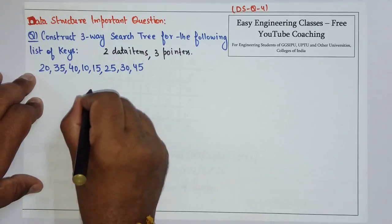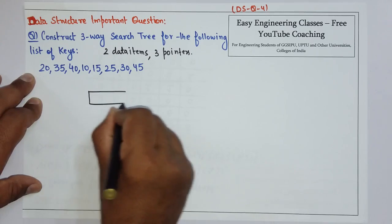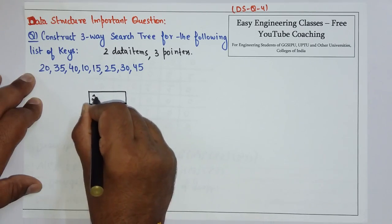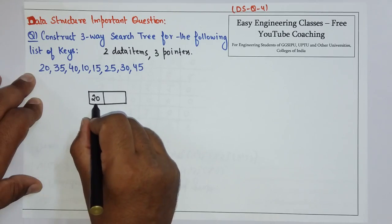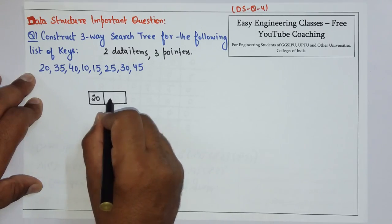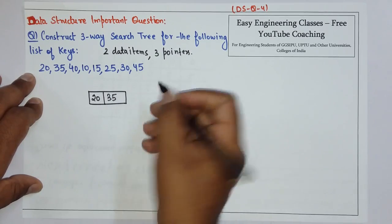Let's start building. First element is 20, so we will add this on the node. Then comes 35. Since 35 is greater than 20, it will be on the right-hand side of 20.